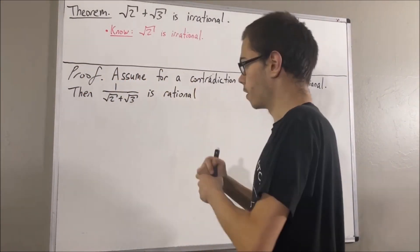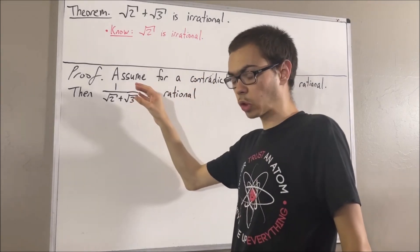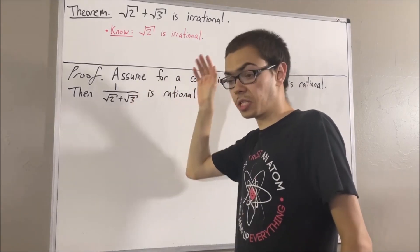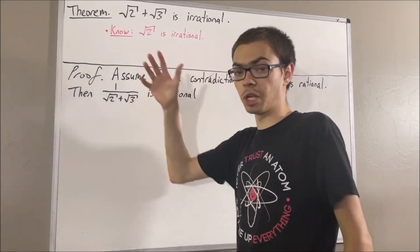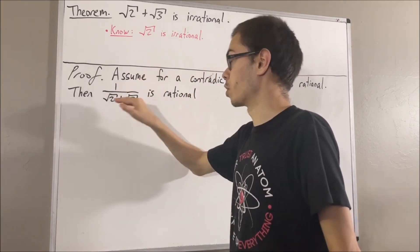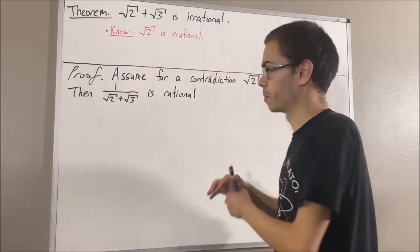And if we take any rational number and multiply it by negative 1, the result is still a rational number. Therefore, negative 1 over (square root of 2 plus square root of 3) is rational.